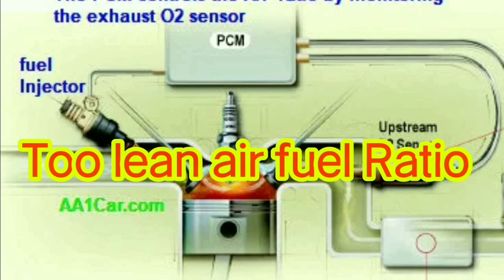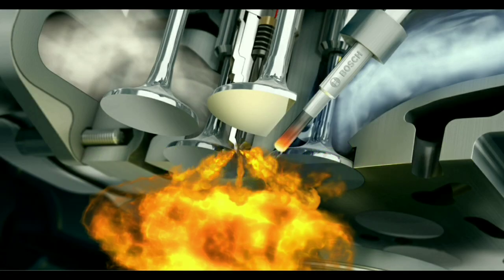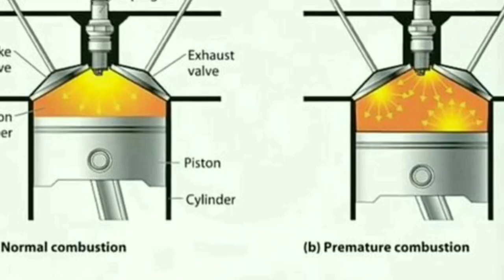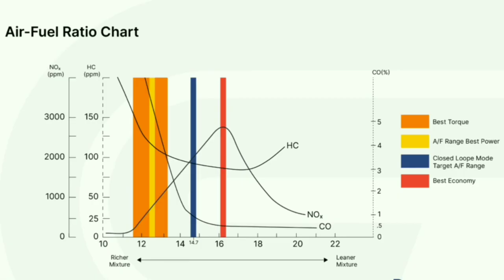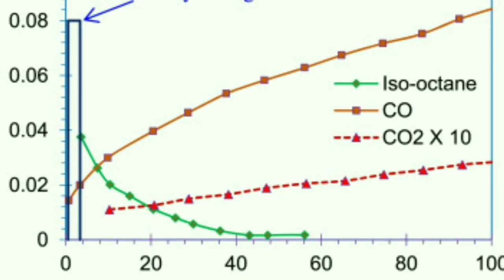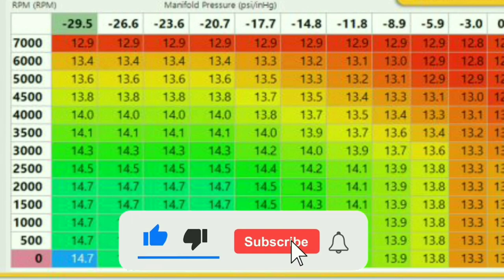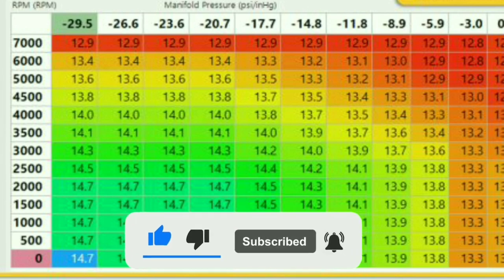The third sign is a lean air-fuel ratio. Running lean, the opposite of running rich, means your vehicle has too little fuel and too much air in each combustion chamber. Similar to running rich, the MAF sensor sends inaccurate information to the ECM, underestimating the amount of airflow. Although this may temporarily improve fuel efficiency, running lean for too long can cause serious damage to your vehicle.